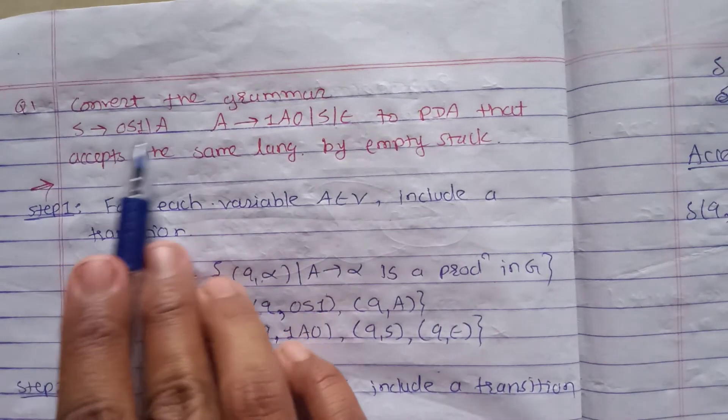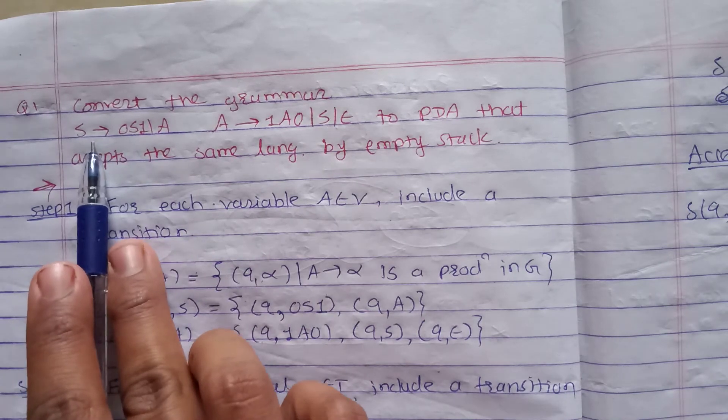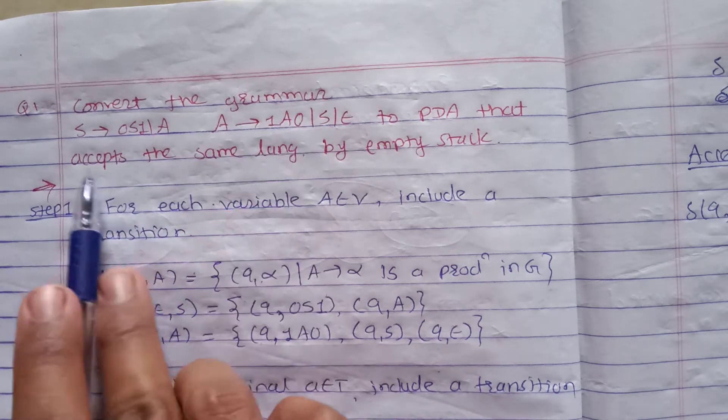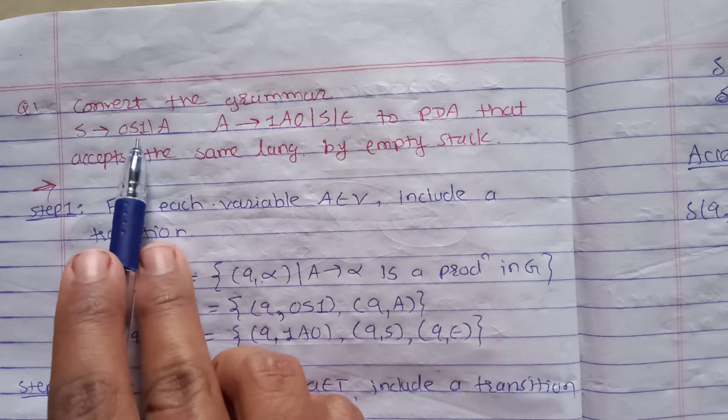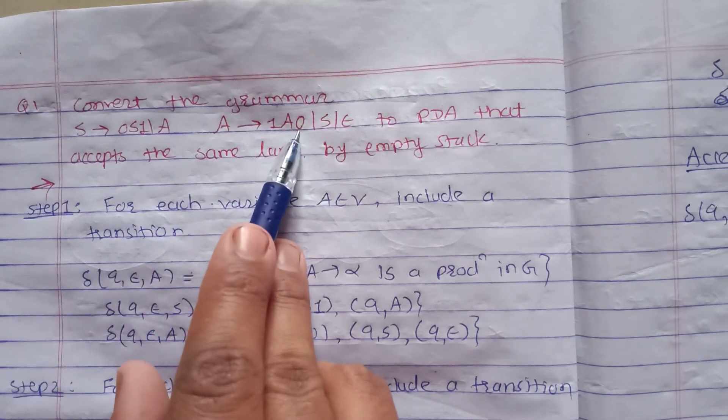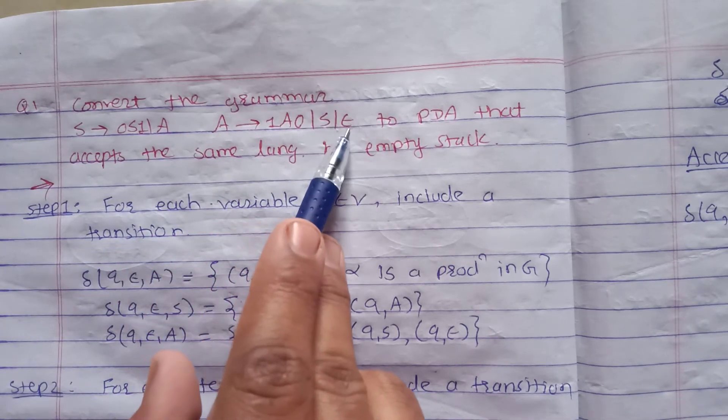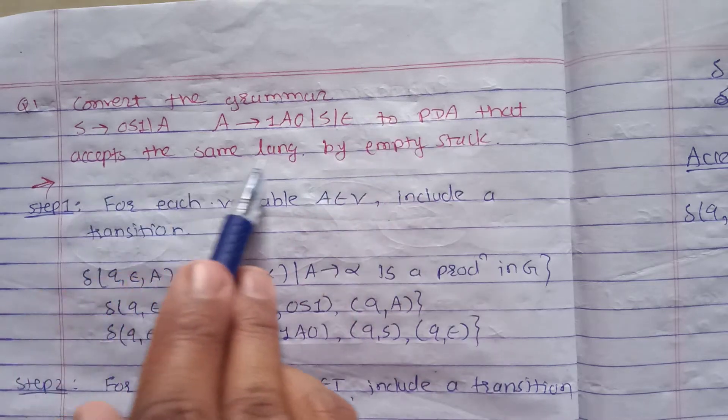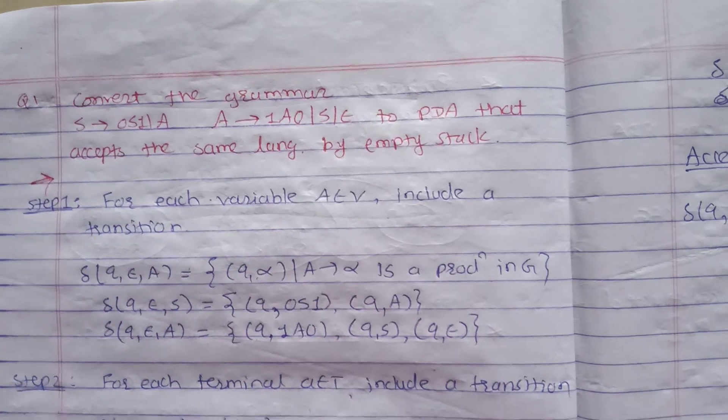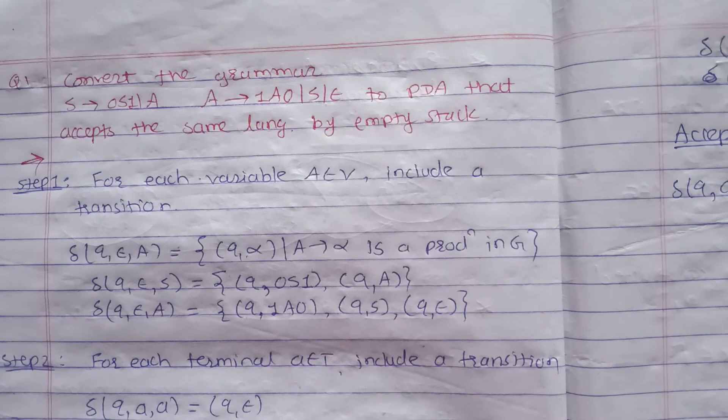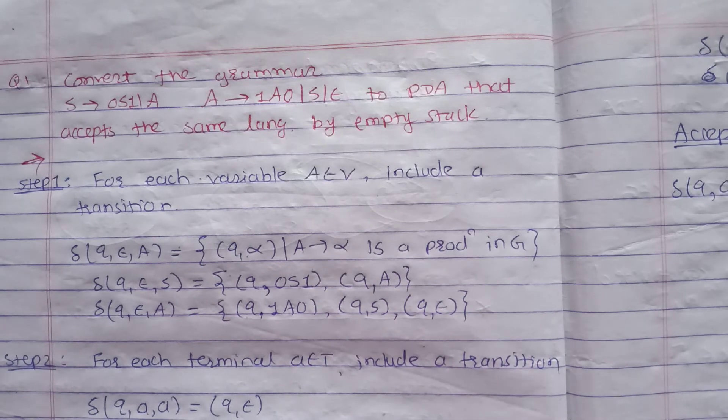We will see example based on this. Construct the grammar - sorry, convert the grammar that is S produces 0S1 or A, A produces 1A0 or S or ε, to PDA that accepts the same language by the empty stack. Now what do we need to do? We need to include a transition for variable and terminal.